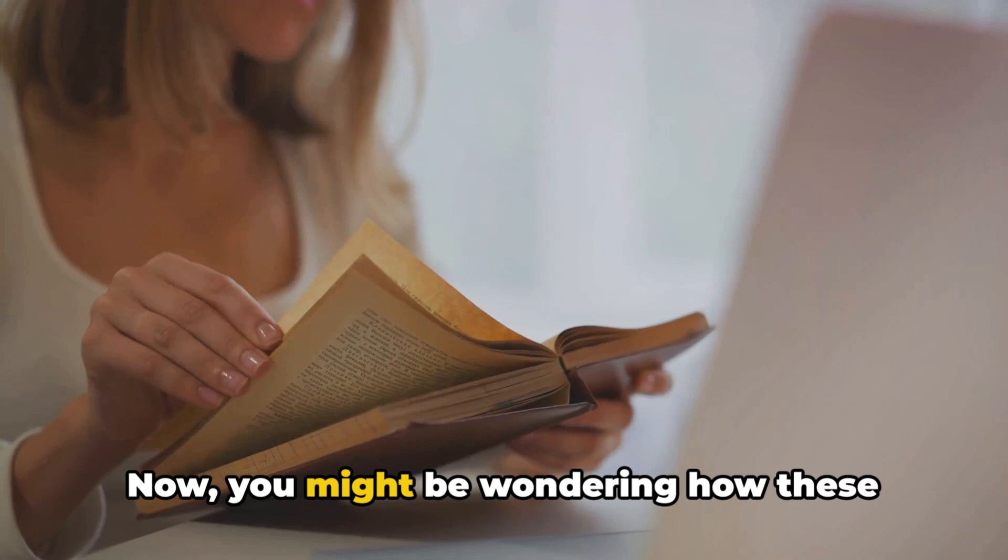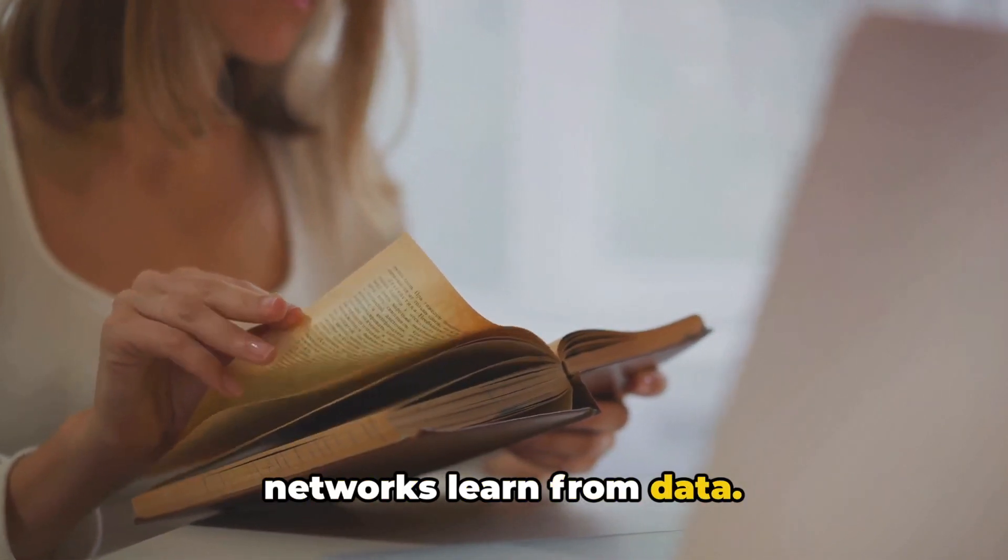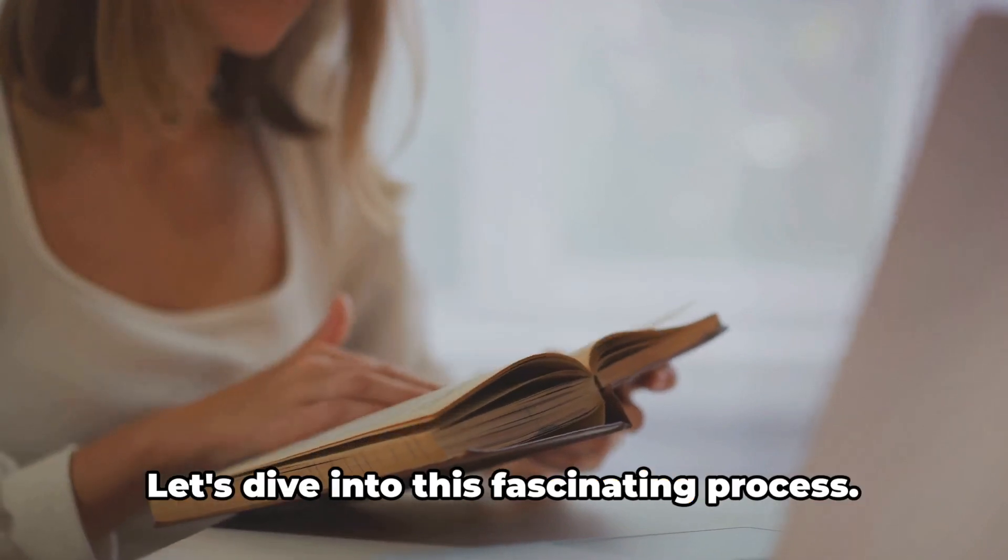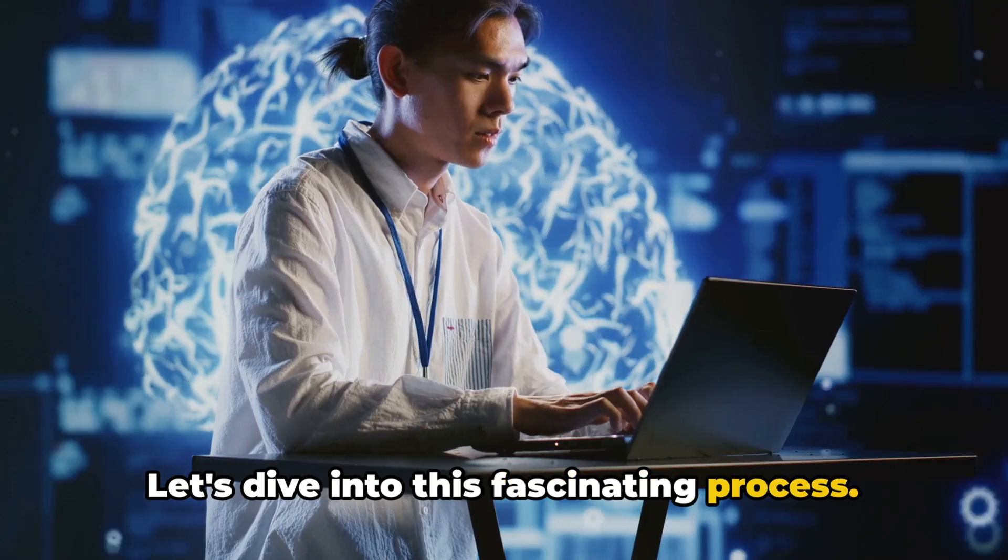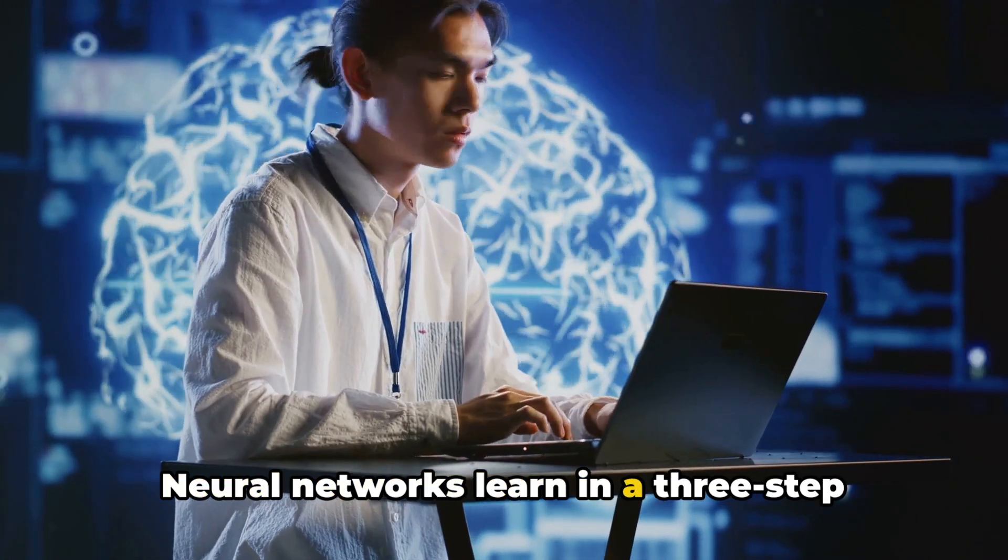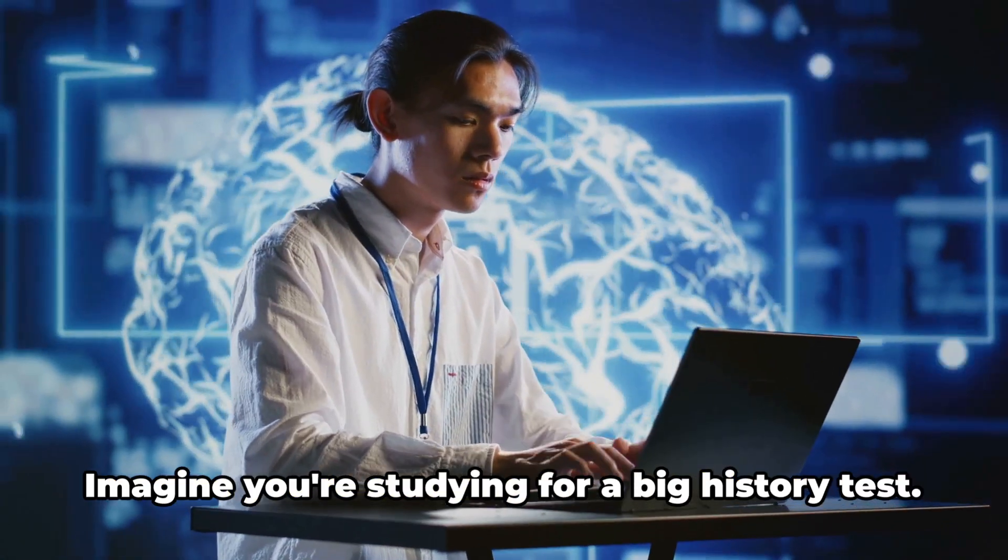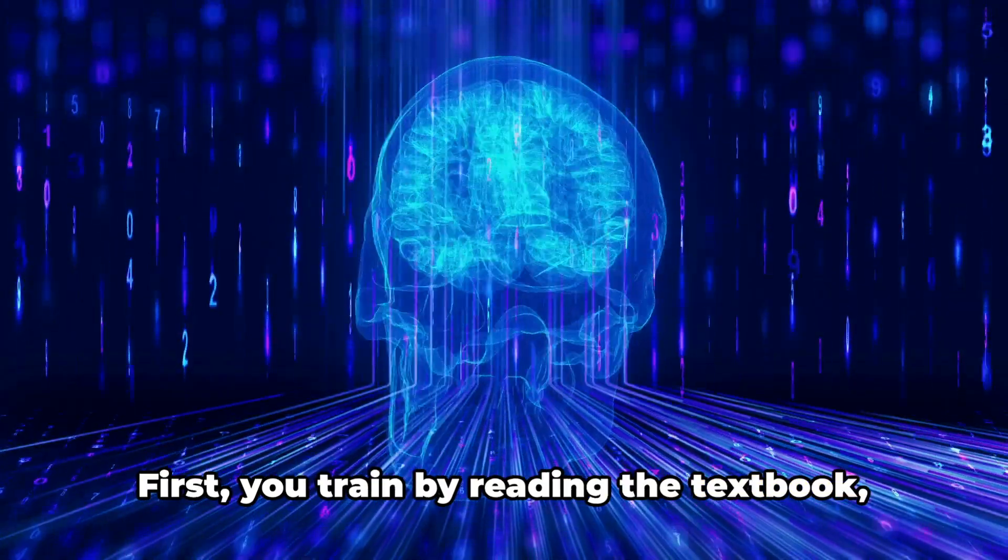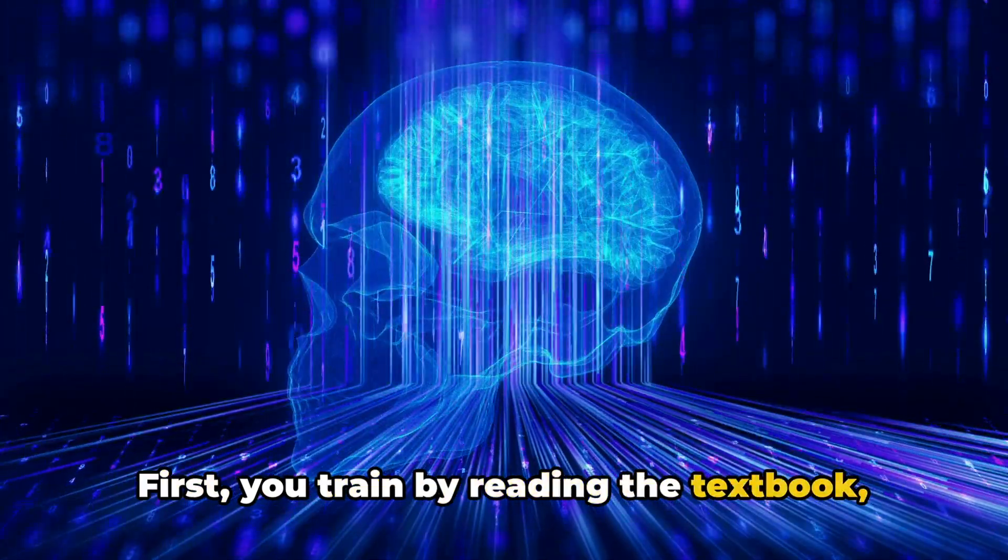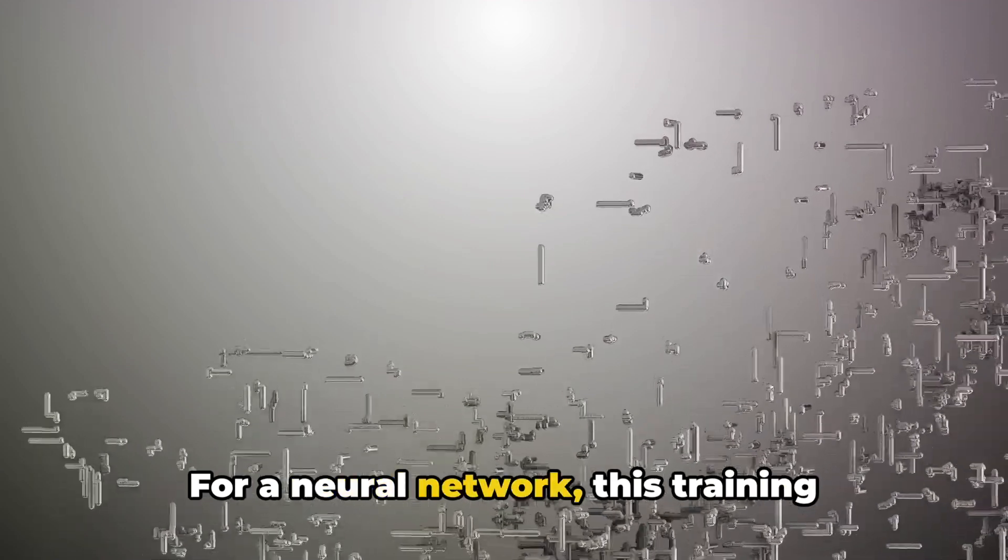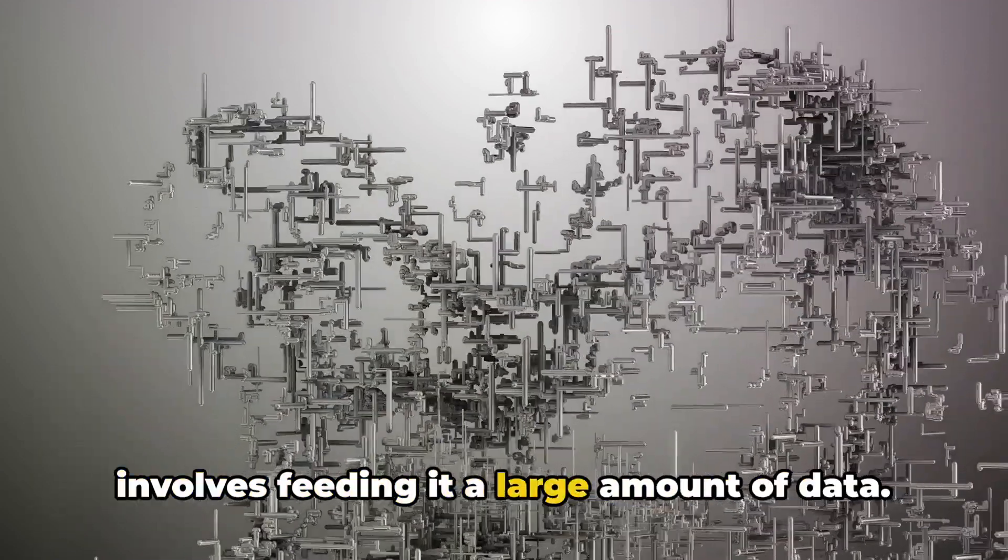Now you might be wondering how these networks learn from data. Well, it's akin to how we humans learn through experience. Let's dive into this fascinating process. Neural networks learn in a three-step process: training, testing, and adjusting. Imagine you're studying for a big history test. First, you train by reading the textbook, absorbing as much information as you can. For a neural network, this training involves feeding it a large amount of data.